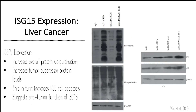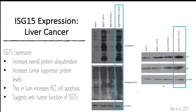A study in liver cancer found that increased ISG15 expression also increases overall protein ubiquitination, which typically indicates proteasome degradation. It also increases tumor suppressor protein levels including p53 and p21, which in turn increases hepatocellular carcinoma cell apoptosis. This suggests an anti-tumor function of ISG15.